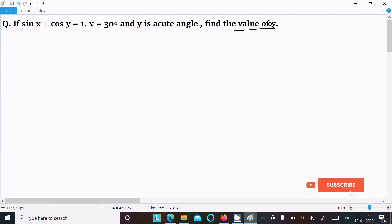Going to find the value of y. The given is sin x plus cos y equals 1, and x equals 30 degrees, and y is an acute angle. So let's see the answer.